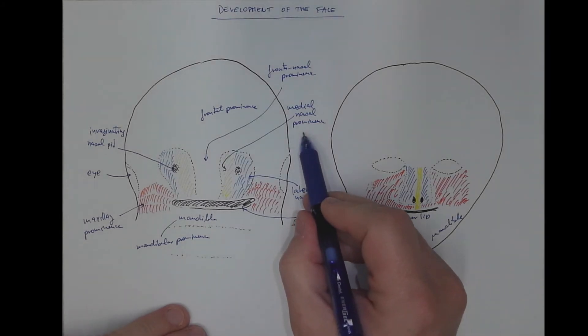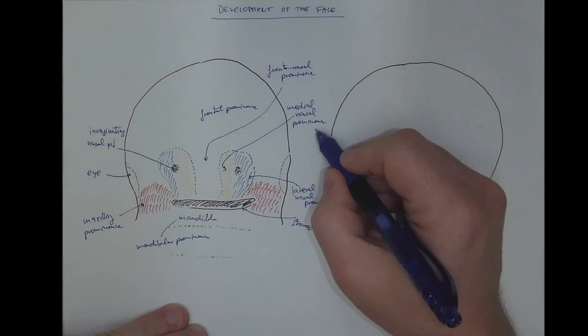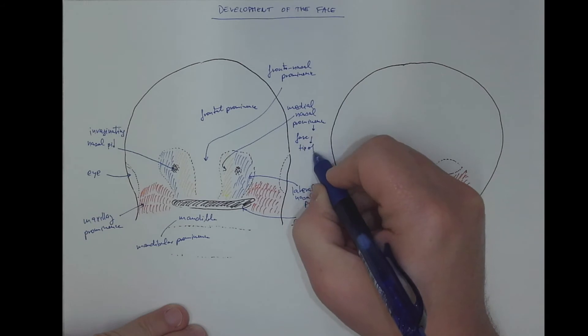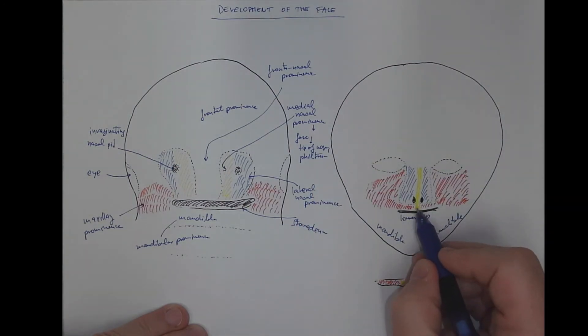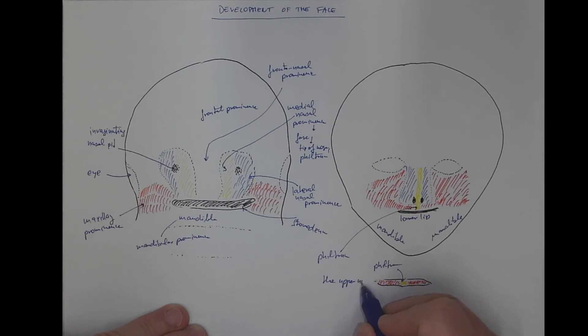But let's label these parts. So the medial nasal prominence, they will fuse to form the tip of the nose and the philtrum. This is the philtrum of the upper lip.